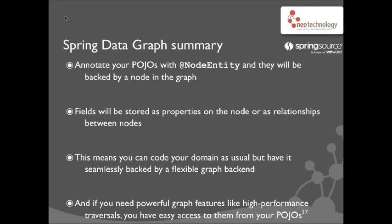What is the high-level summary of the programming model here? We have node entities that you annotate your POJOs with, and then they will be backed by a node in the graph. The fields on the nodes act as sort of properties, and if they are node entities themselves, we will use relationships to describe that field between nodes.